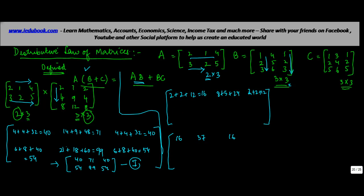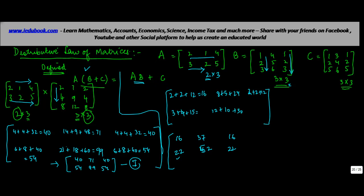Second row, first column of AB: 3 times 1 is 3, 2 times 2 is 4, 5 times 3 is 15 — giving 22. Second row, second column: 3 times 4 is 12, 2 times 5 is 10, 5 times 6 is 30 — giving 52. And the third column gives 22 again. Note: there is a slight error earlier — it should be AC, not BC, for the second term.